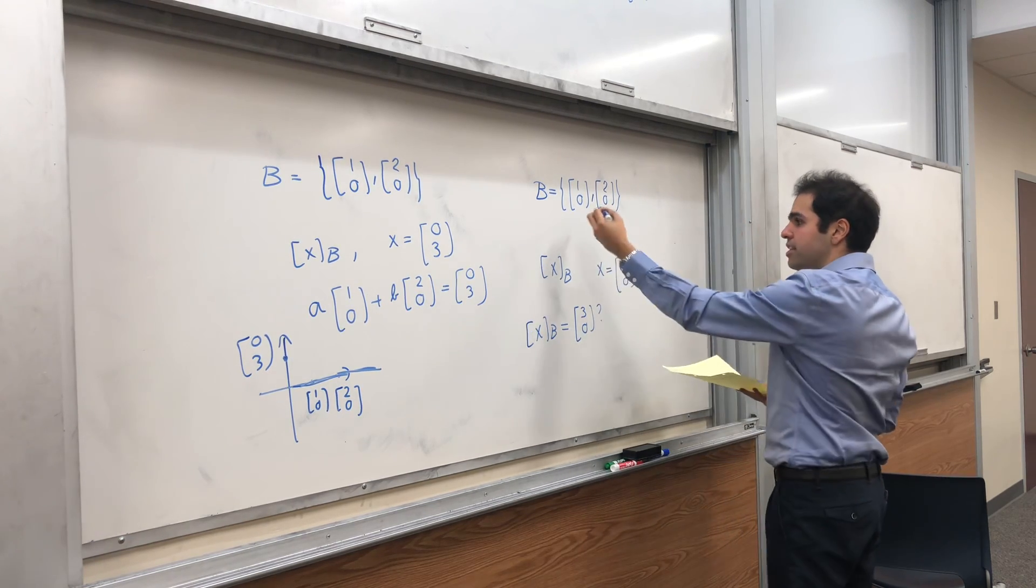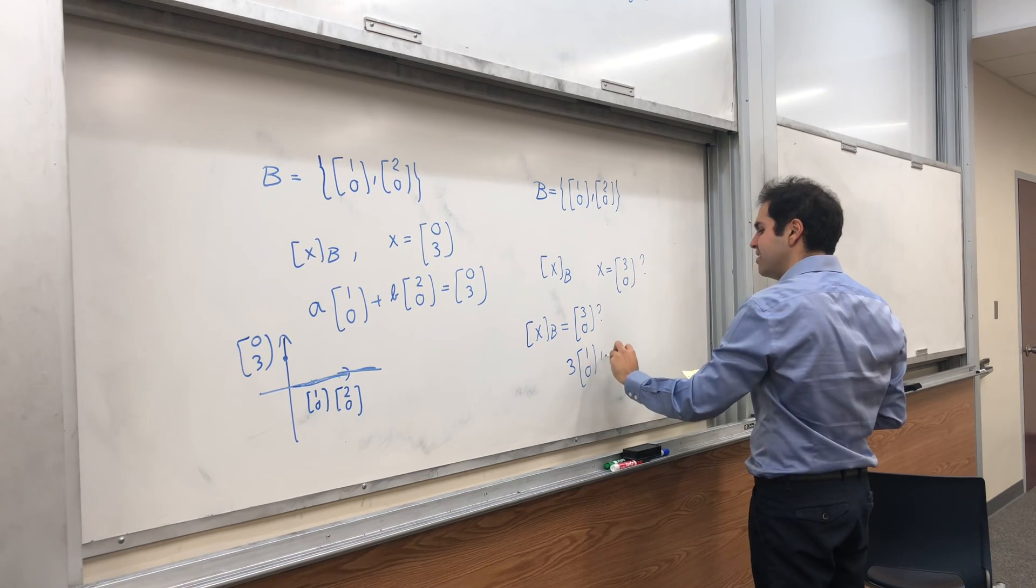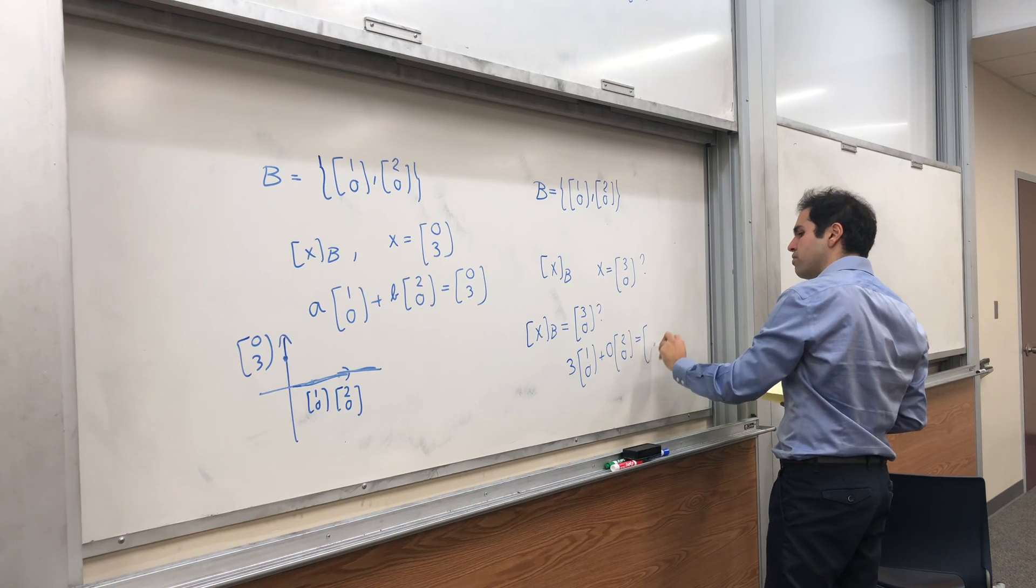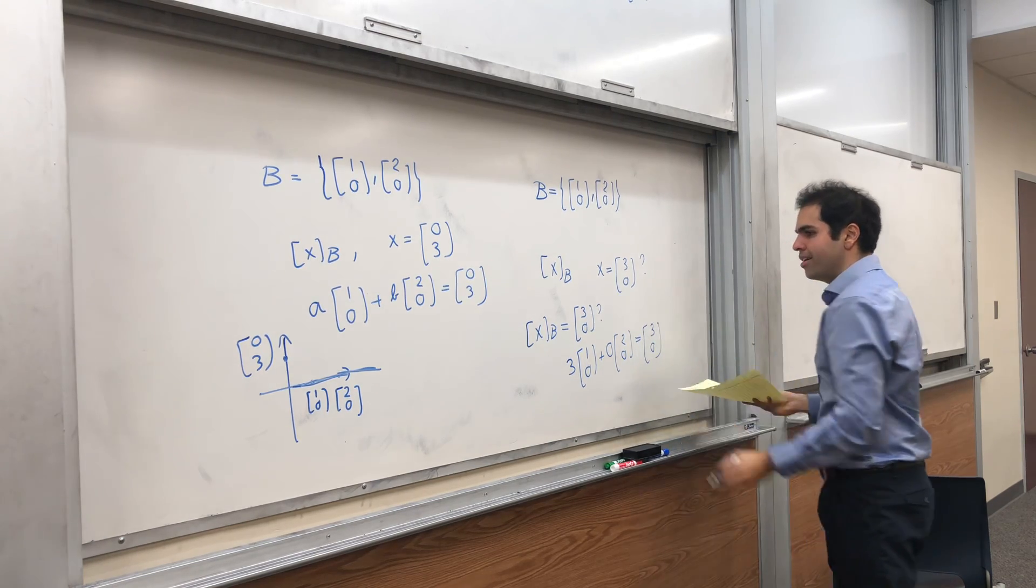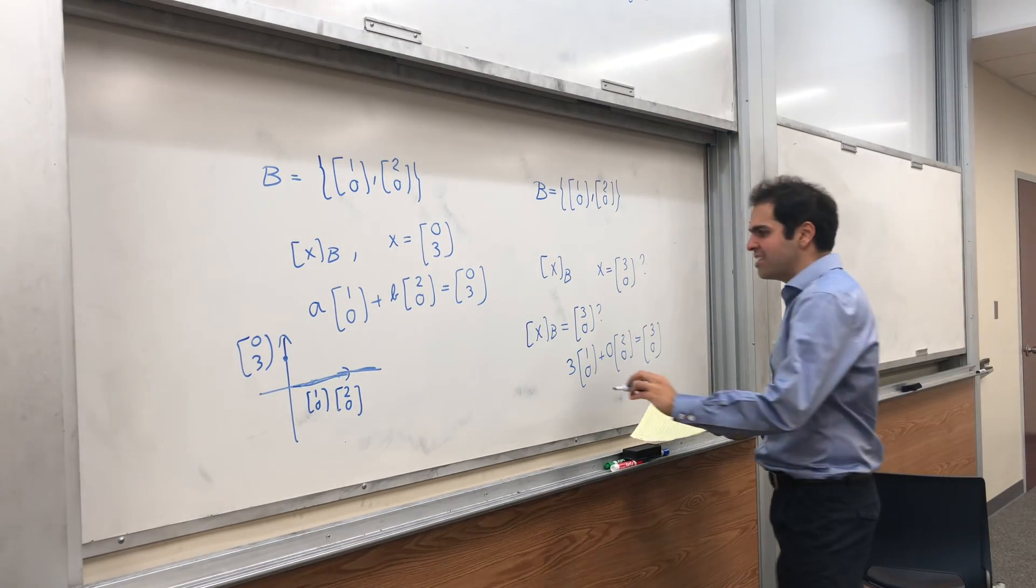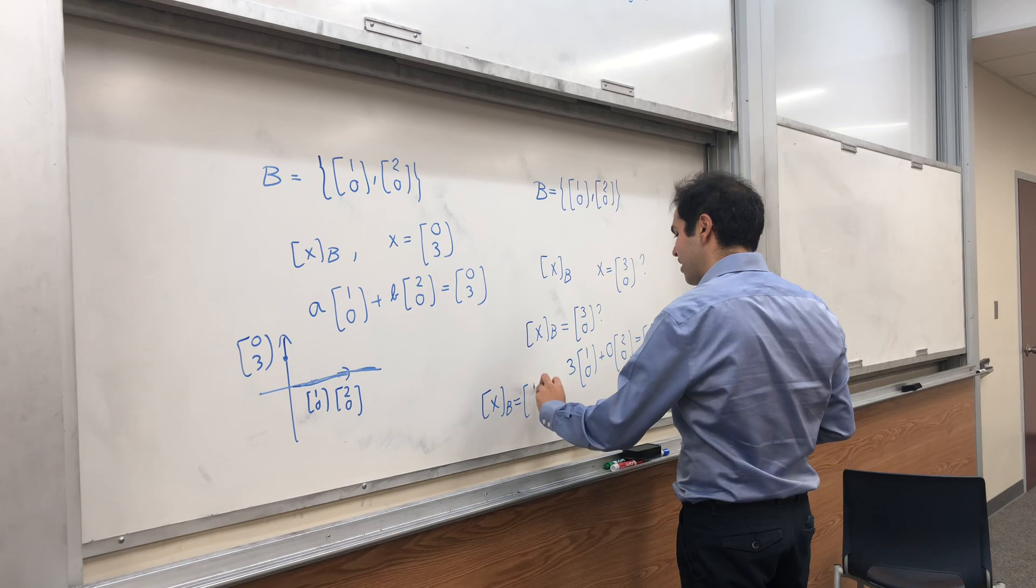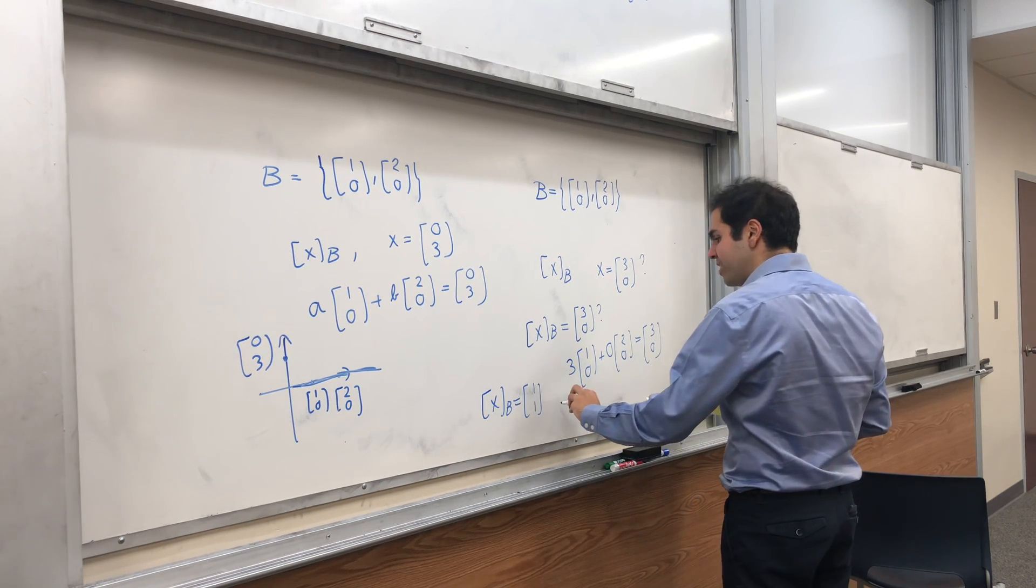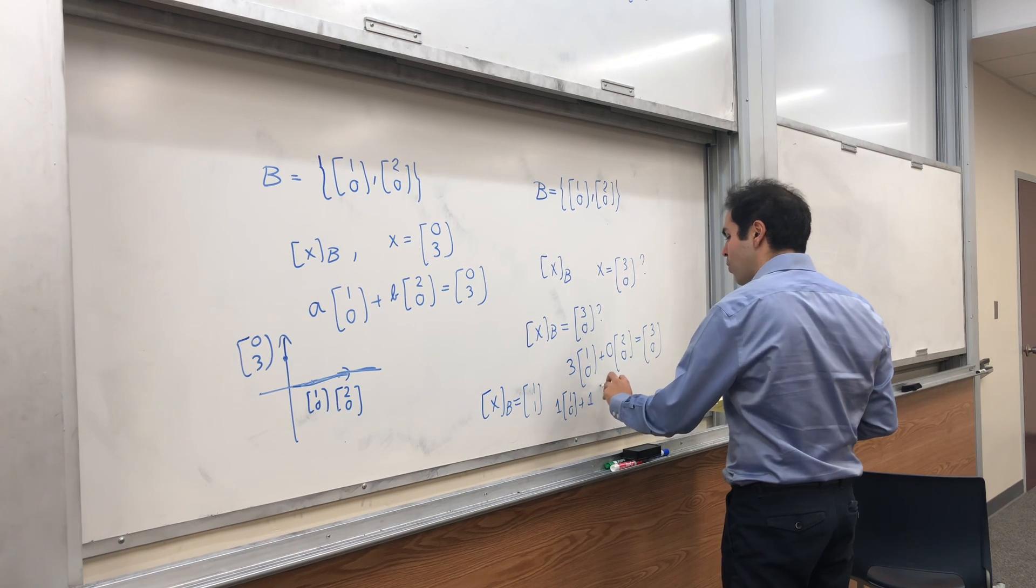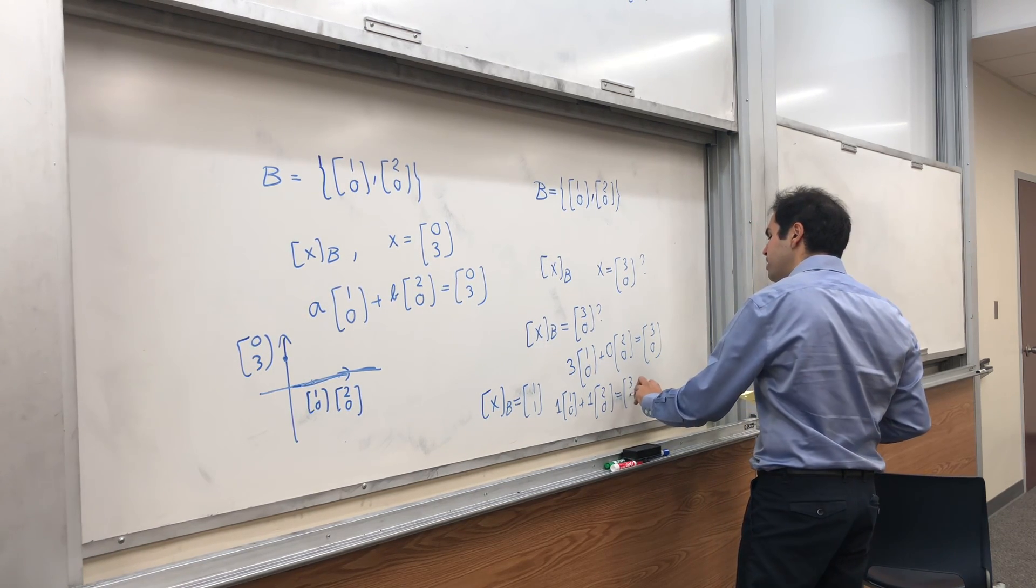Well, yes, because indeed you would have to take three steps in this direction and zero steps in this direction to get your vector (3,0). On the other hand, well, you could say that no, xB would be (1,1). Because you would have to take one step in the direction (1,0) and one step in the direction (2,0) to get (3,0).